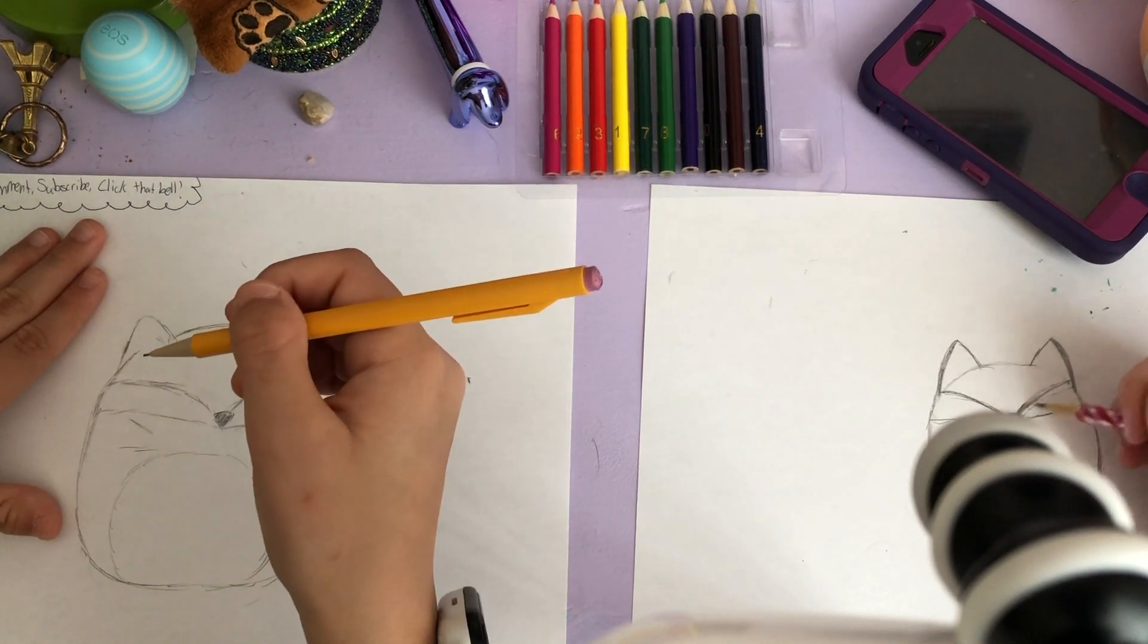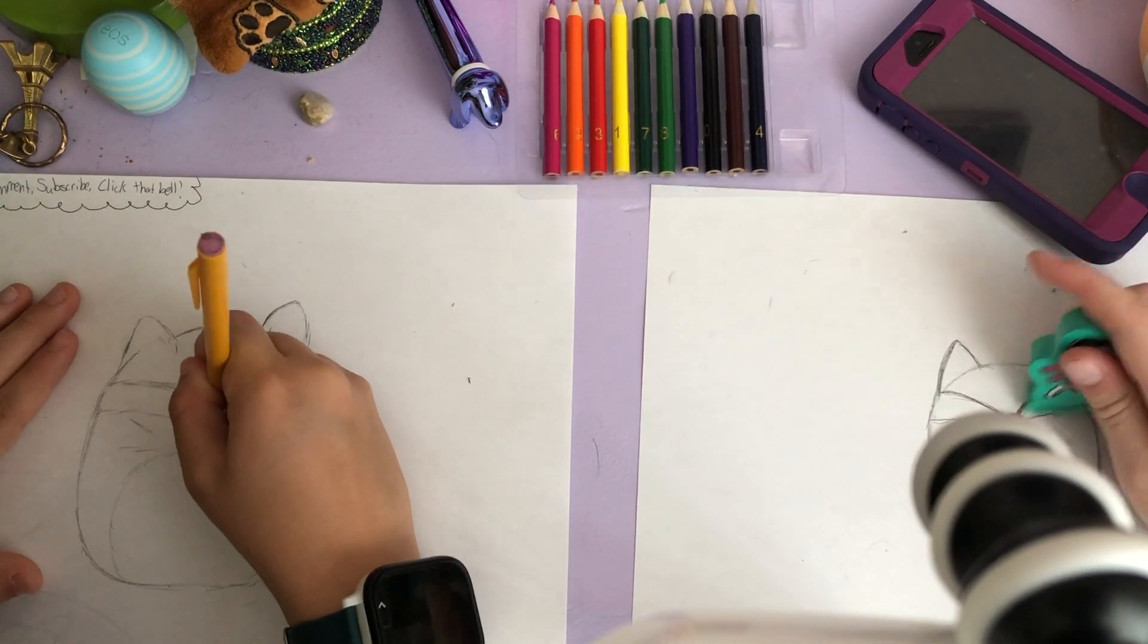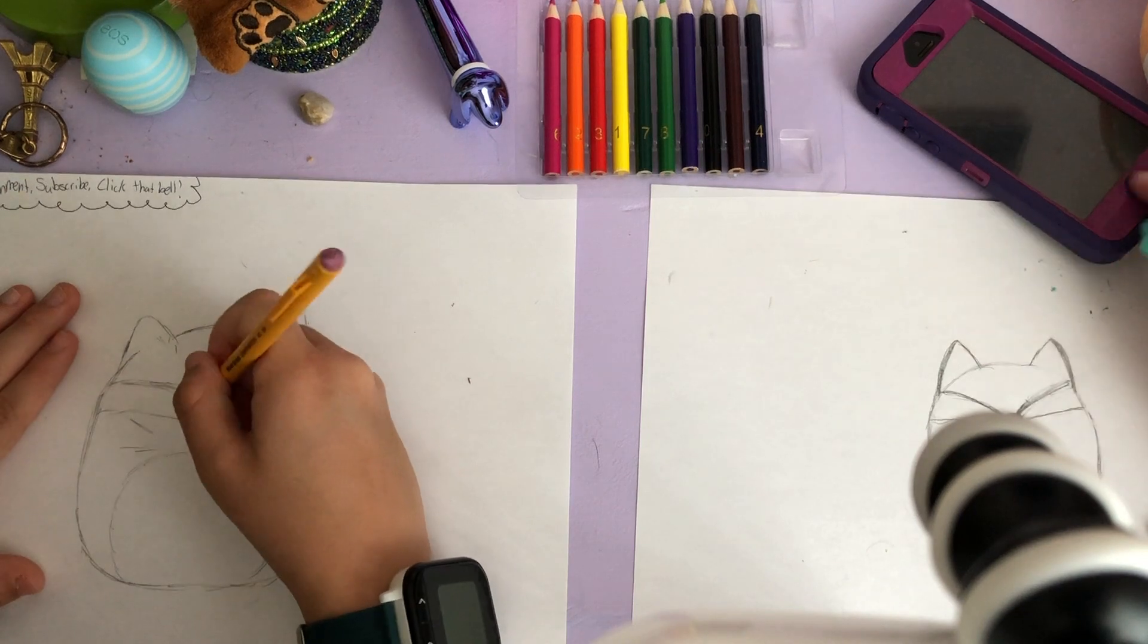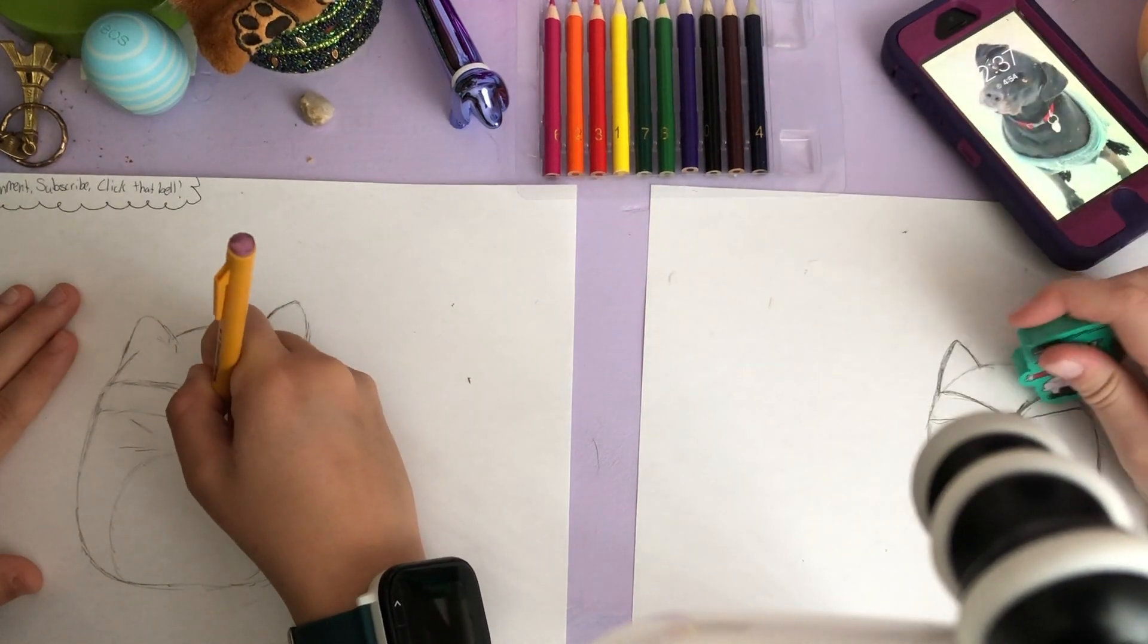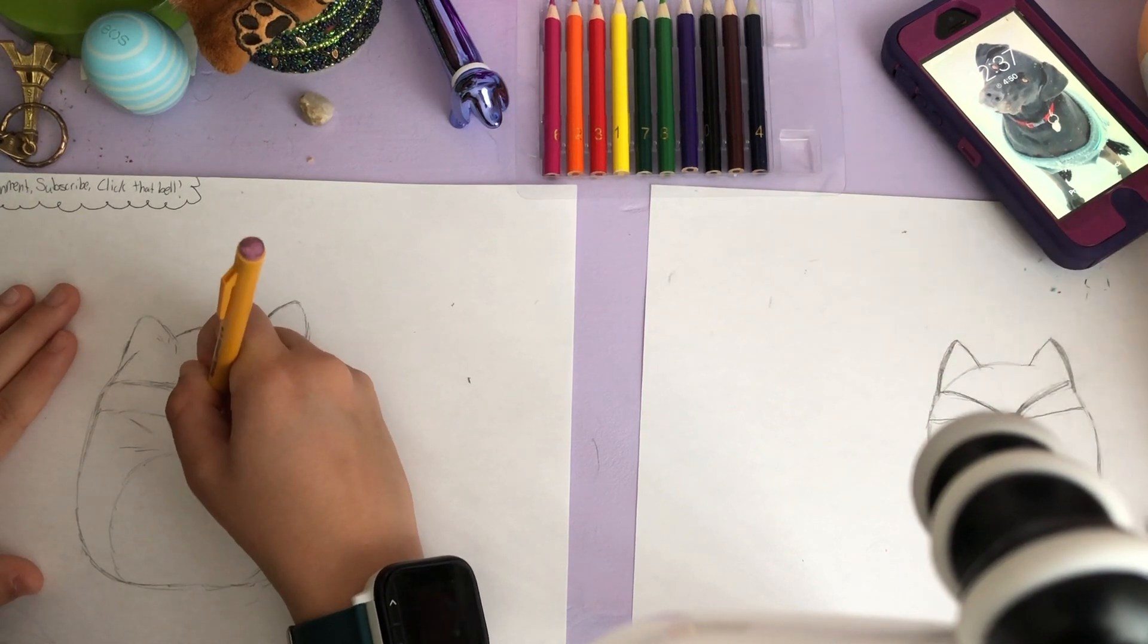This side looks weirder because the nose isn't center. I don't even care about coloring right now. How many minutes do we have left? I need to start coloring if I'm gonna make this a beautiful fox like I want to.